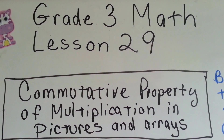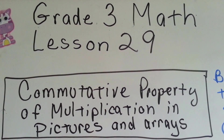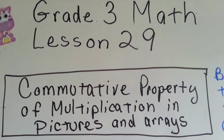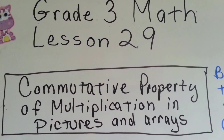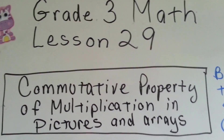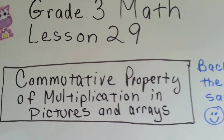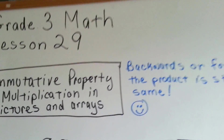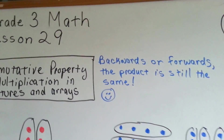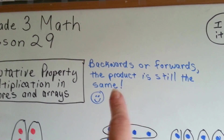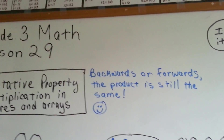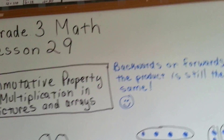Grade 3 Math, Lesson 29: The Commutative Property of Multiplication in Pictures and Arrays. Do you remember the commutative property of multiplication? Backwards or forwards, the product — the answer — is still the same.